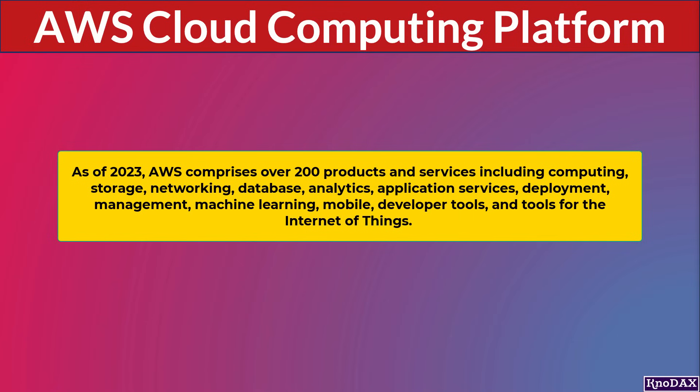This lecture is an overview of the AWS Cloud Computing Platform. We will understand the platform by categorizing some main AWS services. AWS comprises over 200 products and services, including computing, storage, networking, database, analytics, application services, deployment, management, machine learning, mobile, developer tools, and tools for the Internet of Things. A few main ones have been chosen as examples to illustrate how various AWS services fit into the larger scheme of things.